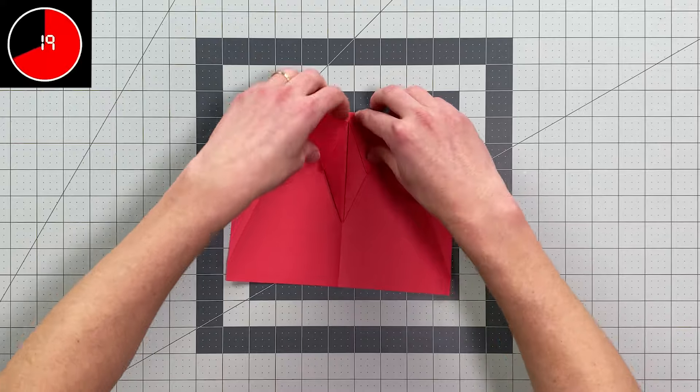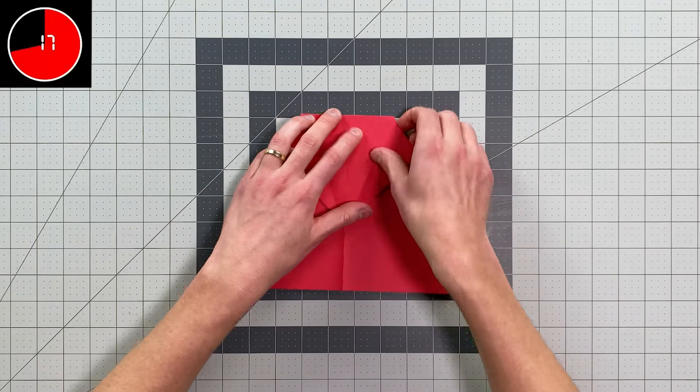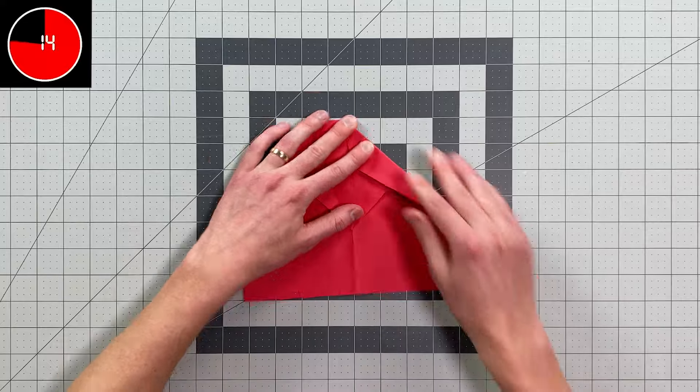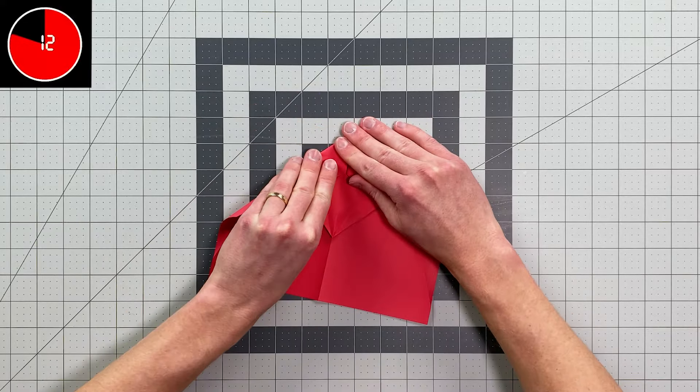And then you can open both of these, just like this. Fold that top little edge to the center, just like that. Do the same thing on this side.